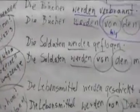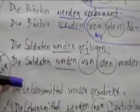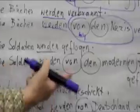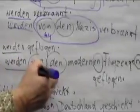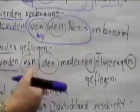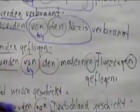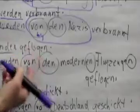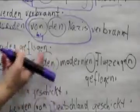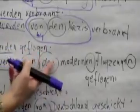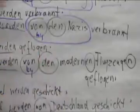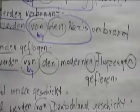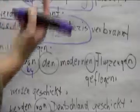Let's see how that changes. Die Soldaten werden — von, our preposition. Now, die Flugzeuge has to change to den, because it's plural, remember. Plural: die changes to den.